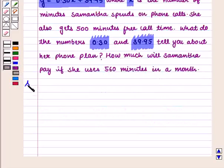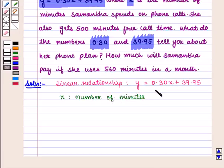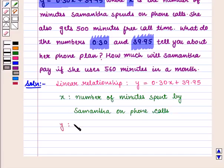Let us start with the solution of this question. We are given the linear relationship y = 0.30x + 39.95, where x is the number of minutes spent by Samantha on phone calls, and y is the monthly cost of plan.